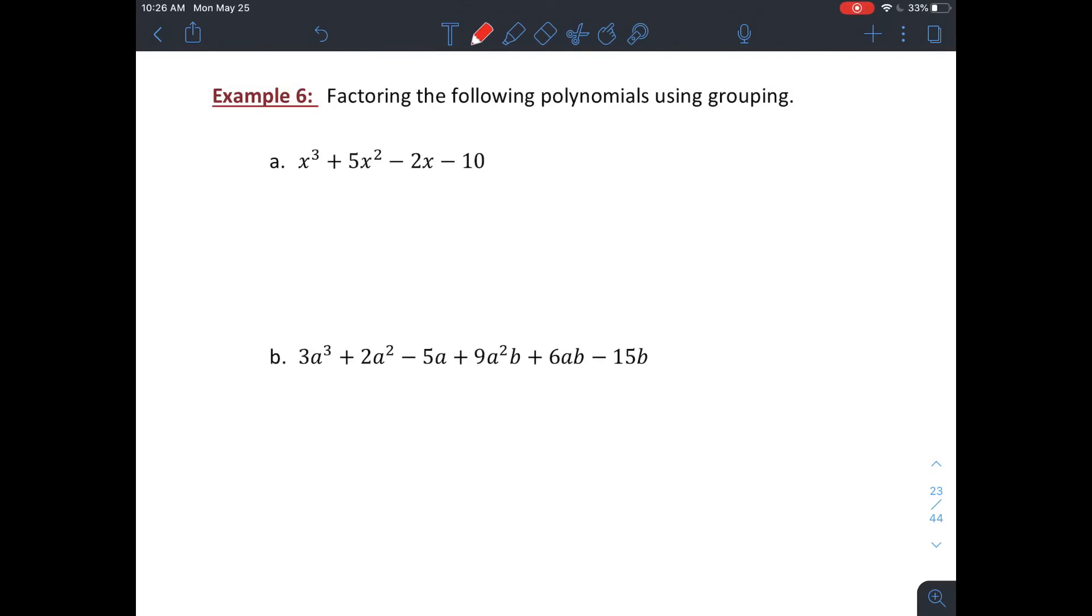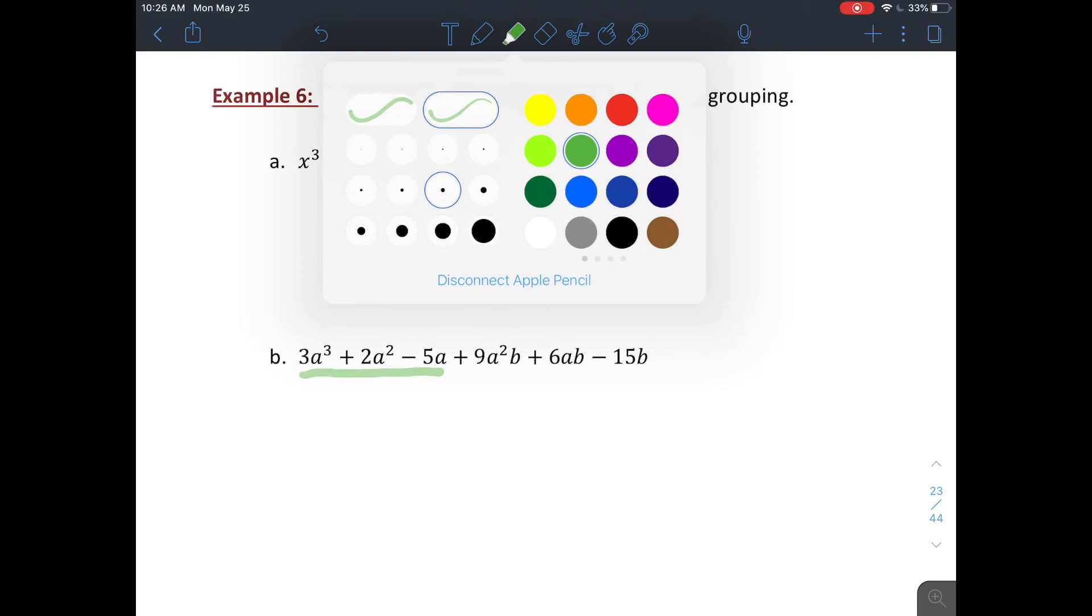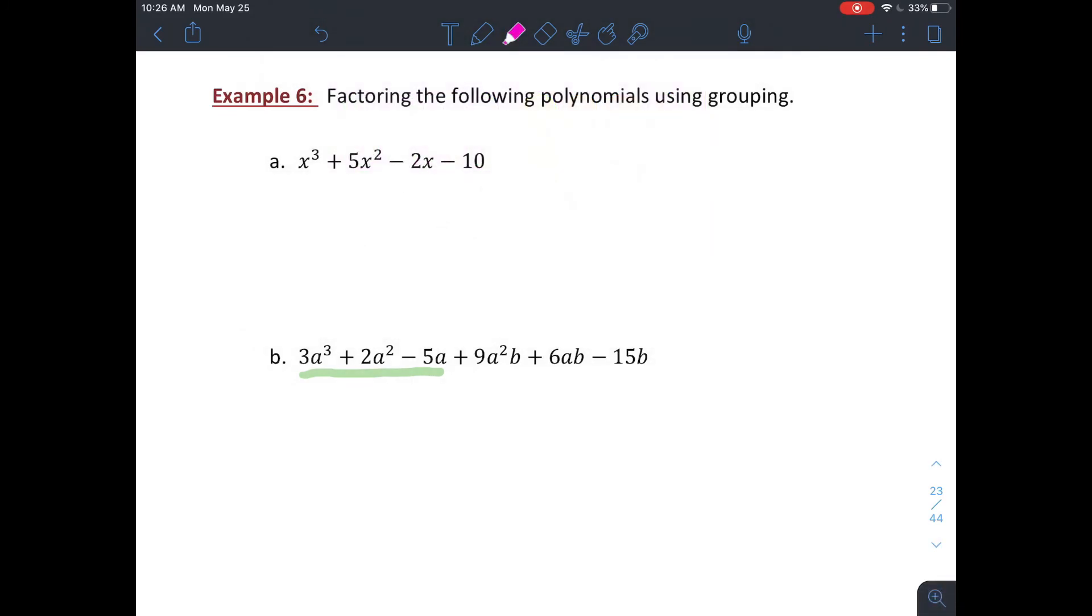All right, so sometimes if you have an even number of terms, all you can do is factor by grouping. So I did a little factoring by grouping as one of the options on your quadratic that we did earlier. If you look at b here, there's six terms. I could break this into like three groups of two that share a common factor. Or if I look at it, I can break it into two groups of three terms and factor out a common factor. You may have to play a little bit before you come up with something that works nicely for you.